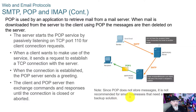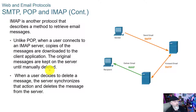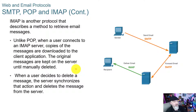POP does not store messages, so it is not recommended for small businesses that need a centralized backup solution. IMAP is another protocol that describes a method to retrieve email. Unlike POP, when a user connects to an IMAP server, copies of the messages are downloaded to the client application but the original messages are kept on the server until manually deleted. When a user decides to delete messages, the server synchronizes that action — it leaves the message on the server until you delete it on your client, at which point it sends a message back to the server to delete or move it to the trash.